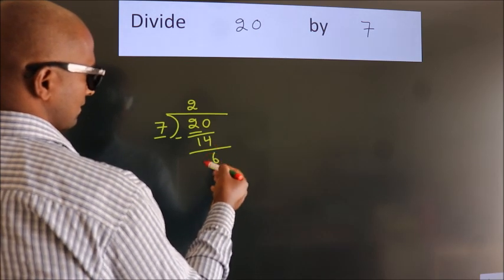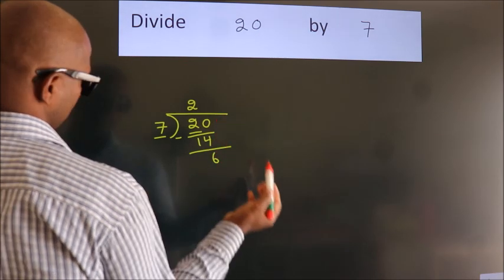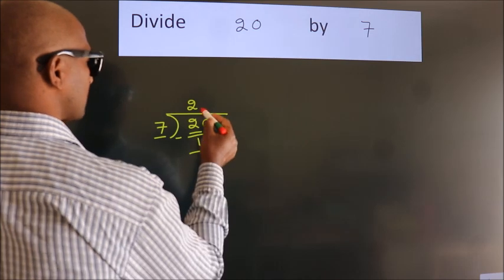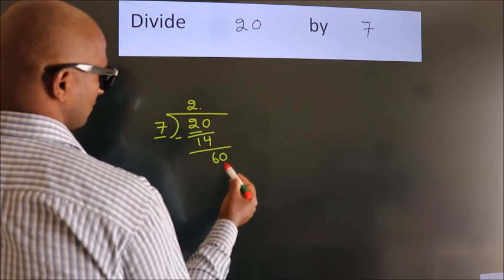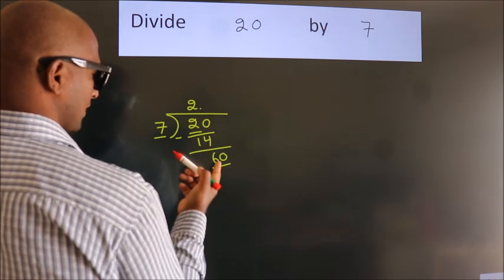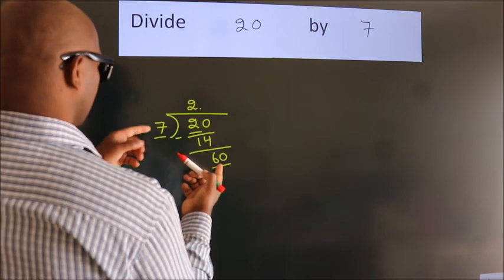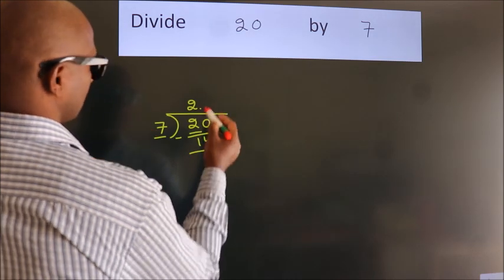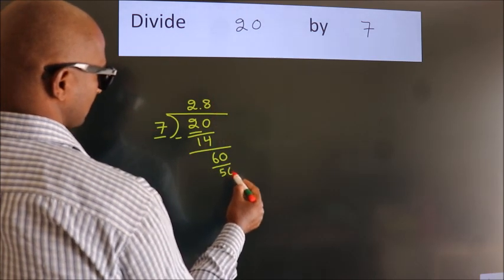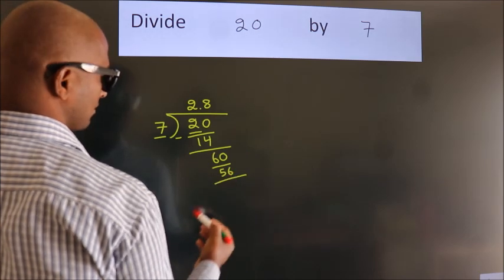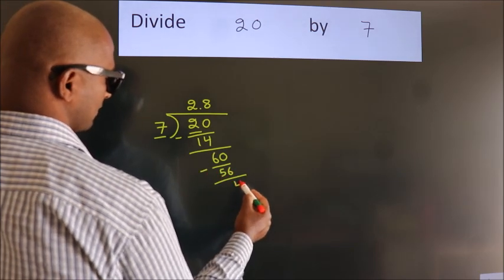After this, no more numbers to bring it down. So what we do is, we put a dot, take 0. So 60. A number close to 60 in 7 table is 7 8s 56. Now we subtract. We get 4.